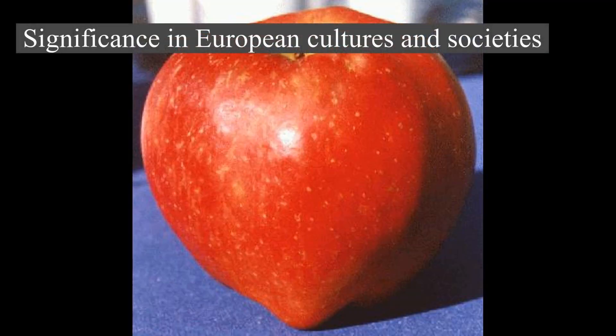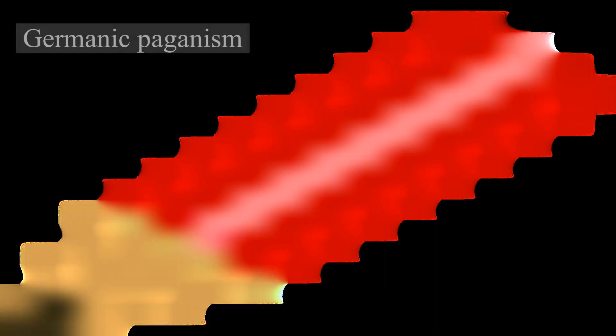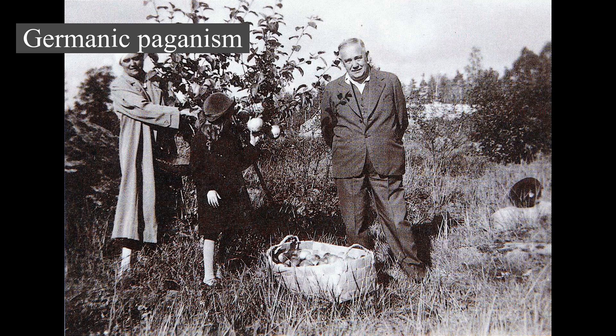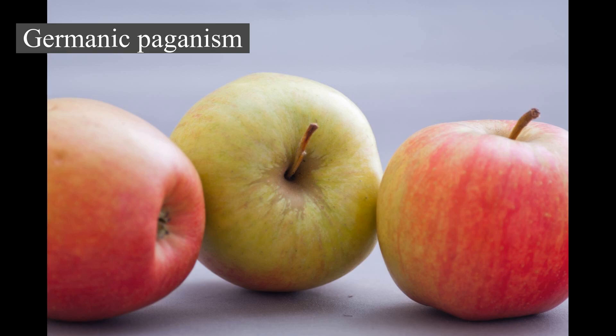Significance in European Cultures and Societies: Germanic paganism. In Norse mythology, the goddess Iðunn is portrayed in the Prose Edda, written in the 13th century by Snorri Sturluson, as providing apples to the gods that give them eternal youthfulness. The English scholar H. R. Ellis Davidson links apples to religious practices in Germanic paganism, from which Norse paganism developed. She points out that buckets of apples were found in the Oseberg ship burial site in Norway, and that fruit and nuts have been found in early graves of the Germanic peoples in England and elsewhere on the continent of Europe, which may have had a symbolic meaning, and that nuts are still a recognized symbol of fertility in southwest England.